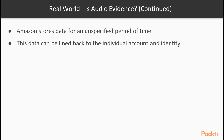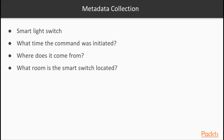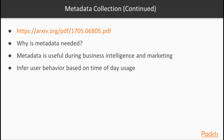What was interesting to note is that Amazon does store the data for an unspecified period of time, and that data can be linked back to an individual account and identity. Consider a smart light switch: data might flow as a command signal to change the state to on or off, but there is other metadata generated — what time the command was initiated, where it came from, what room the switch is located in. A Princeton study showed how easy it is to identify and separate unique data streams coming from a smart home and infer behavior based on those streams — even using encrypted traffic.